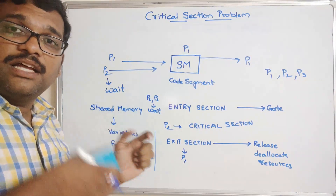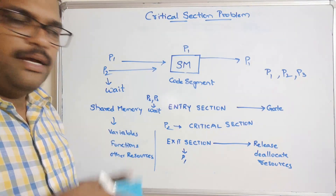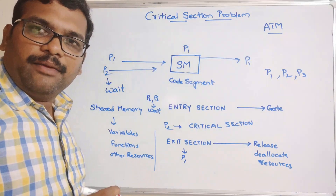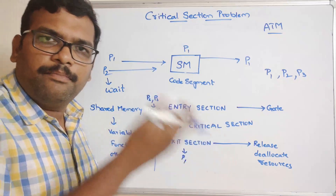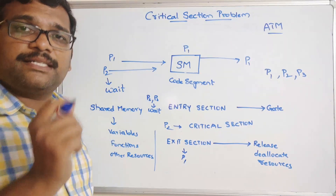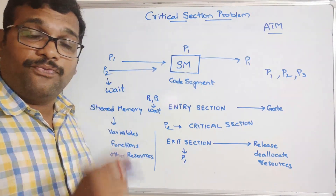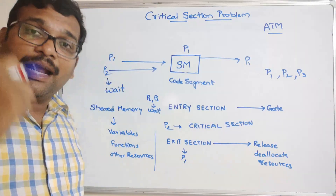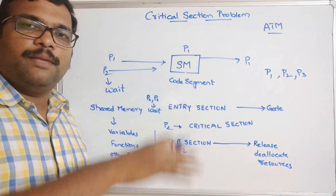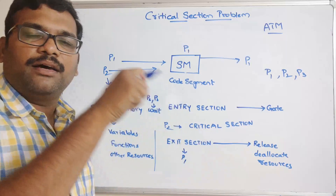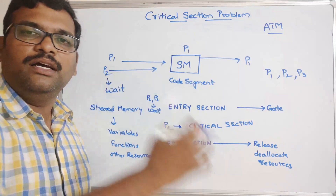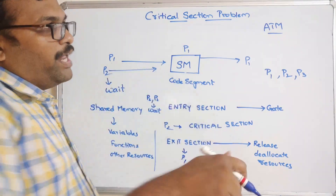This is how processes get executed. A good real-world example is an ATM. We all know about ATMs — at any time we can go to an ATM machine and withdraw money, but at a time only one person can enter. Once one person is availing the services, another person has to wait until he or she completes. Once the person inside the ATM has completed the services and comes out, only then is the second person allowed to use the ATM machine.